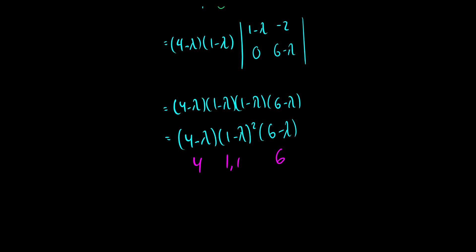The (1 minus lambda) squared term means eigenvalue 1 appears with multiplicity 2 — it appears as an eigenvalue twice. That's how we find eigenvalues with determinants and characteristic equations. Pretty straightforward; there's really not that much to it.